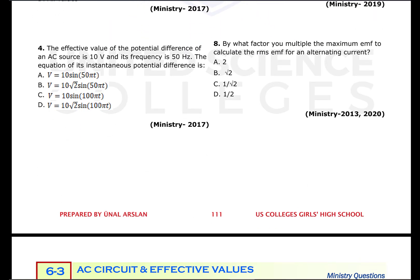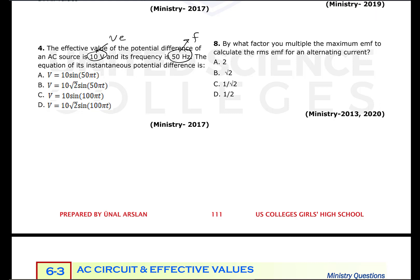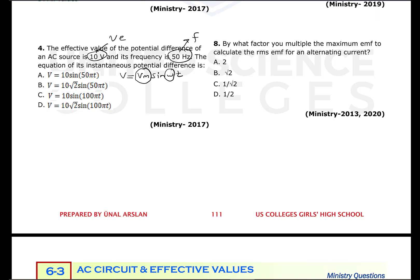Question number four: the effective value of potential difference of an AC source is 10 volts, and its frequency is 50 hertz. Find the equation of its instantaneous potential difference. We know the generator's instantaneous potential difference is V = Vm · sin(ωt). To write the equation, we insert the constants ω and Vm, so we need to calculate them first.